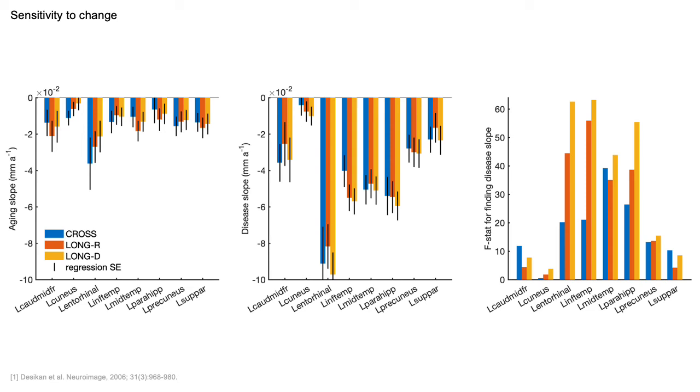For example, the parahippocampal gyrus, whose F-statistic went up, meaning its p-value went down.